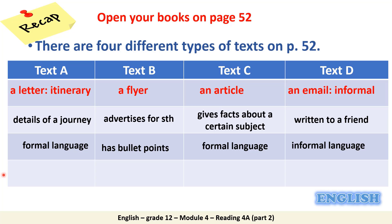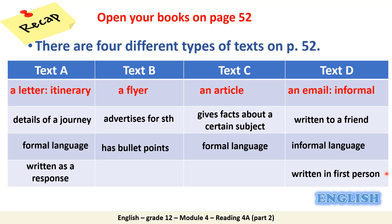Which of the four texts is written as a response to an earlier message or email? This is text A, the itinerary. It is written as a response because at the beginning of the letter we have 'as requested', meaning Miss Bennett sent an email or letter requesting information about her journey details. Which text is written using first person? Text G — we have 'I' and 'my'. And which texts have a title? Text C, the article, and the flyer both have a title.